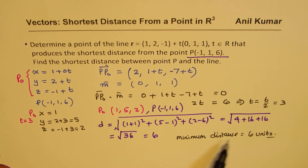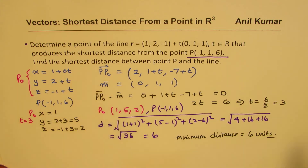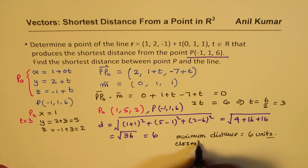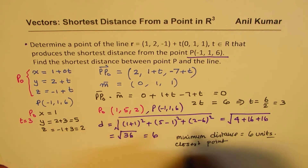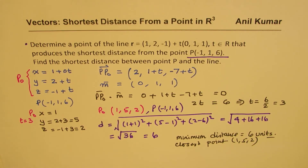So we found both things: the shortest distance is 6 units, and the closest point on the line is (1, 5, 2). That is how we can use the dot product concept to find the solution. Now let's take the second example and see how the cross product concept can be used to find the shortest distance from a point in R3 to the line.